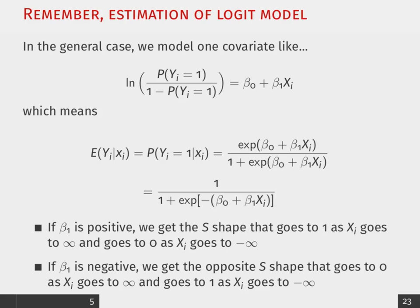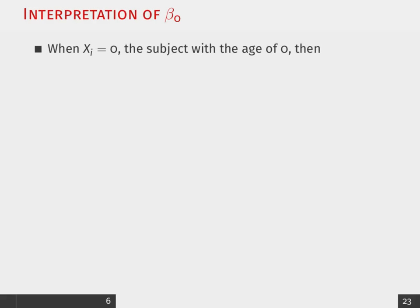So, when we're actually going to look at the intercept and try to interpret what that means, remember, we're thinking about when X equals 0. So, when a subject has an age of 0,